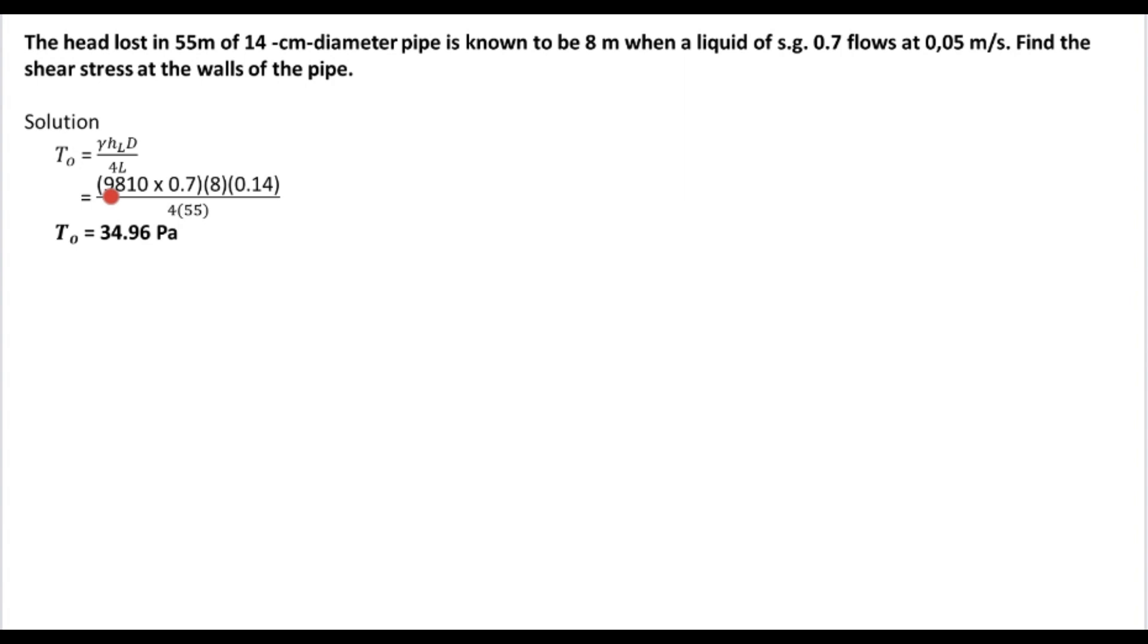So 9,810 times 0.7 times 8 times 0.14. We convert 0.14 into meters and multiply 9.81 times 1000, all over 4. The length, the head loss is 55 meters, so 4 times 55 meters. So the final answer will be 34.96 pascal.